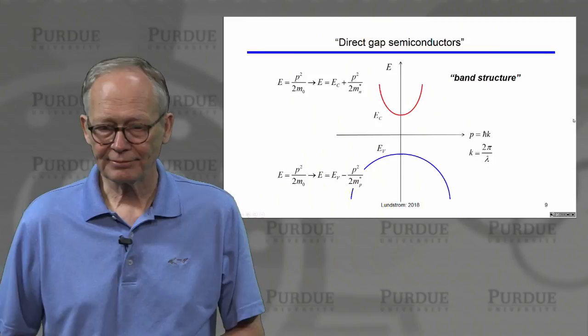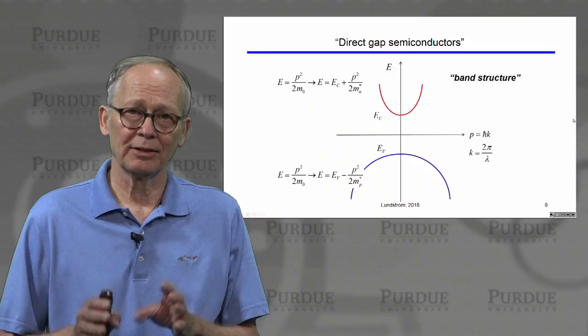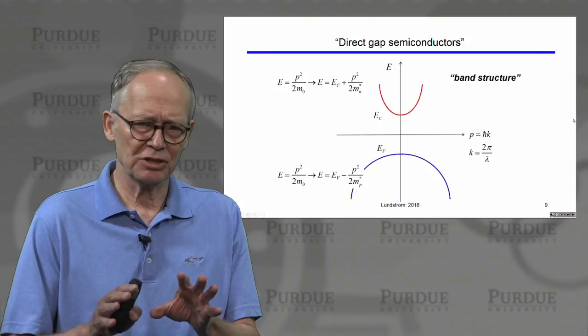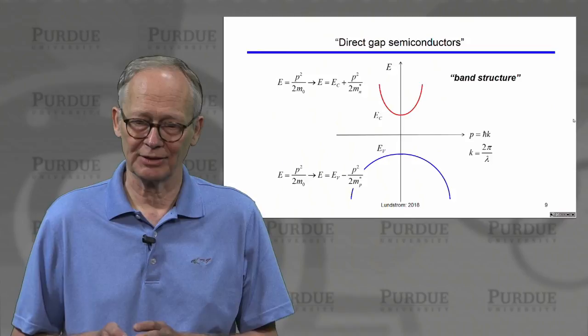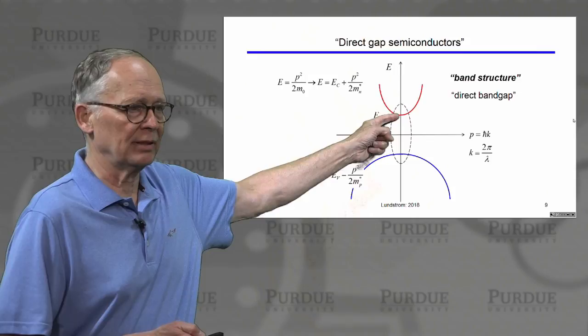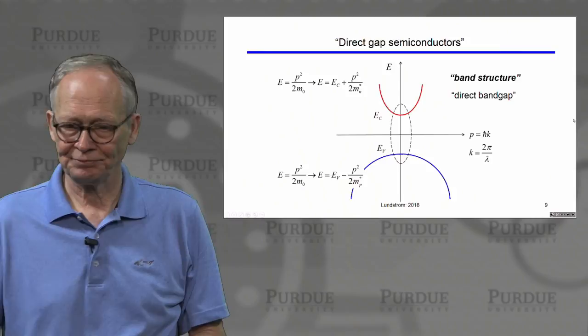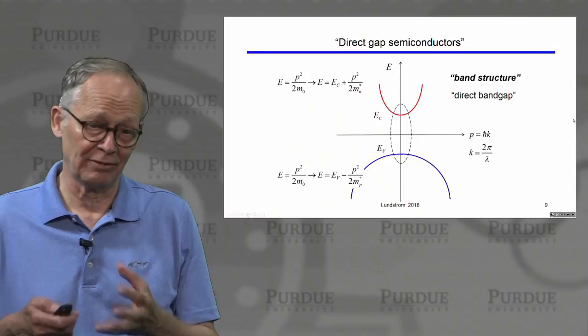These plots are called band structure plots. A direct gap semiconductor is one where the minimum of the conduction band and the maximum of the valence band occur at the same momentum. When an electron and a hole with the same momentum recombine, they emit light. Semiconductors like gallium arsenide are direct gap and have this useful property of emitting light when carriers recombine.